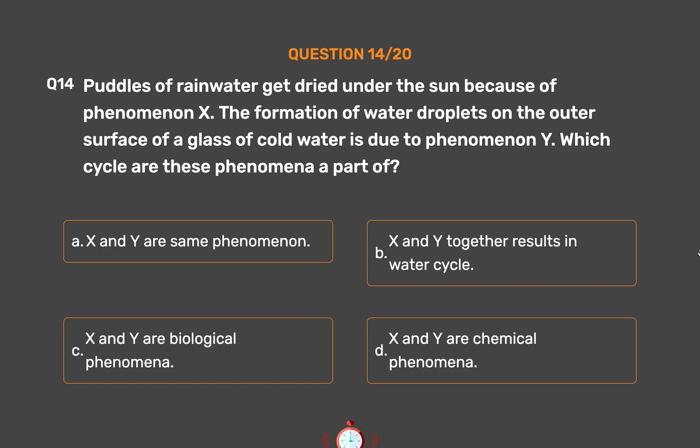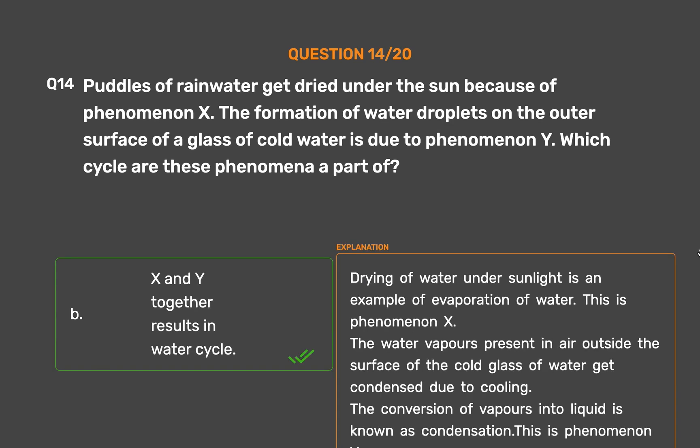The correct answer is Option B: X and Y together result in the water cycle. Drying of water under sunlight is an example of evaporation — this is Phenomenon X. The water vapors present in air outside the surface of a cold glass of water get condensed due to cooling; the conversion of vapors into liquid is known as condensation — this is Phenomenon Y. The two phenomena together result in the water cycle.